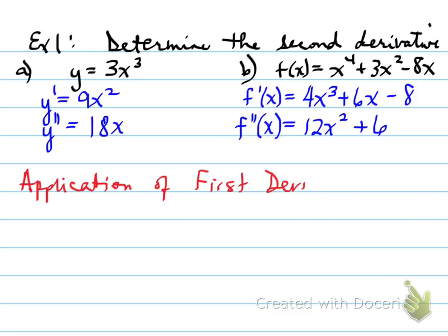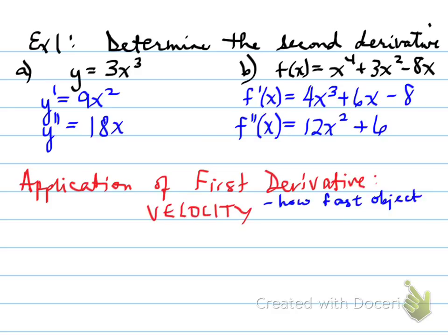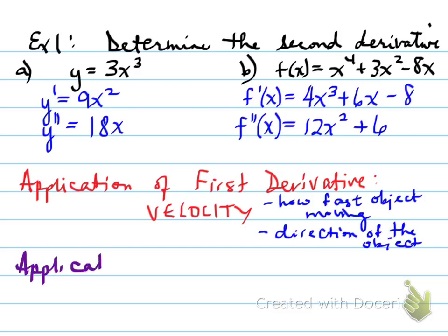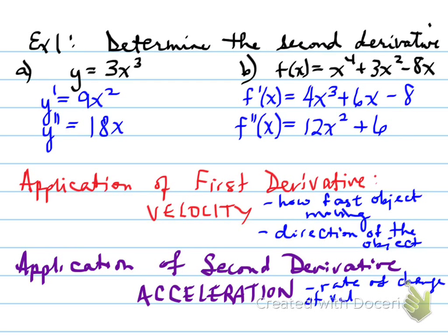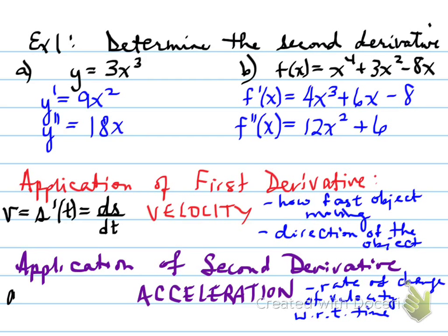The application of the first derivative, as mentioned earlier, is the velocity — how fast an object is moving and the direction of the object. The application of the second derivative is the acceleration, which implies the rate of change of velocity with respect to time. The velocity is the first derivative of the position function, and acceleration is the derivative of the velocity, or the second derivative of the position function.